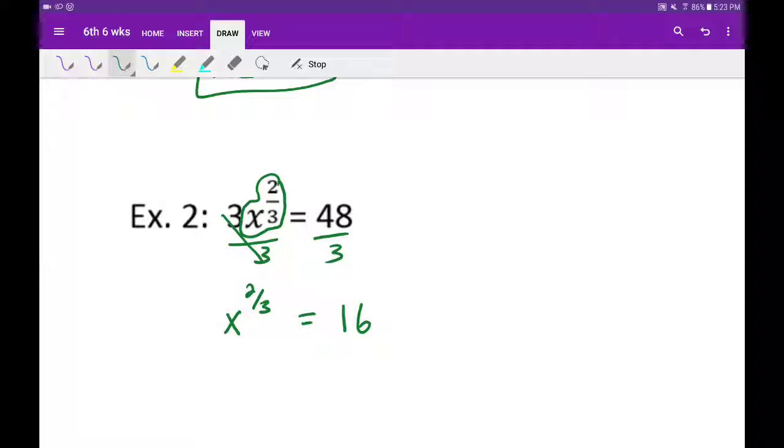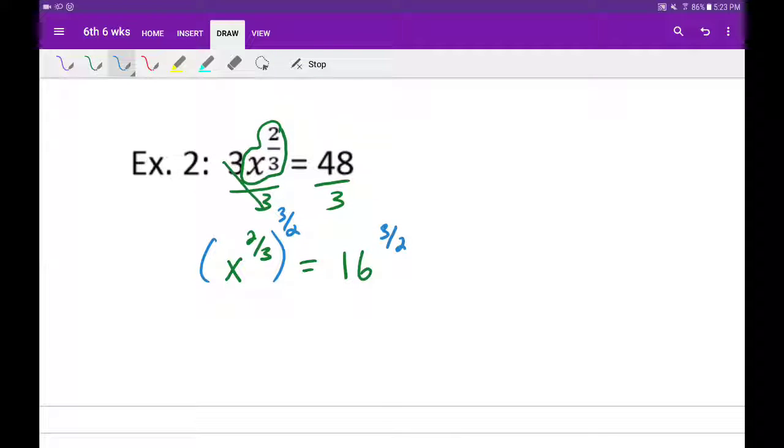Alright, so now we're going to raise it to the reciprocal power, both sides, so now it's going to be 3 over 2 on that side. Alright, so 3s cancel, 2s cancel, that leaves us with x.